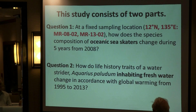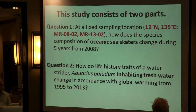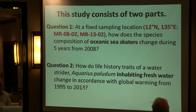This study consists of two parts. The first one is: at a fixed sampling location, how does the species composition of these ocean sea skaters change during five years from 2008? And the second question is: how do life history traits of a water slider, Aquarius paradigm, inhabiting fresh water, change in accordance with global warming from 1995 to 2013?